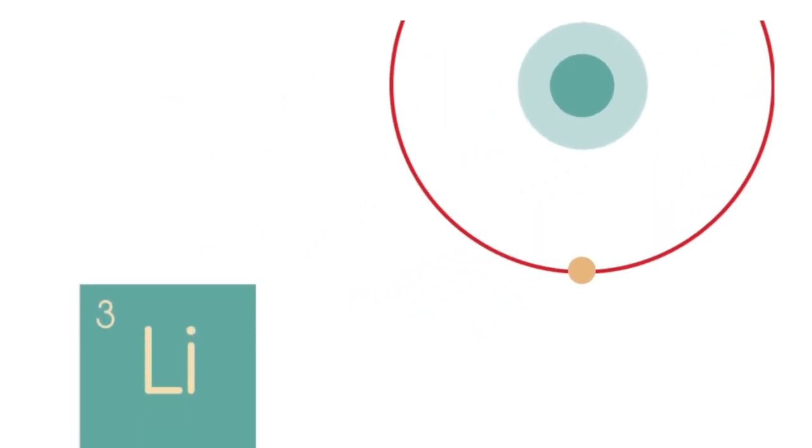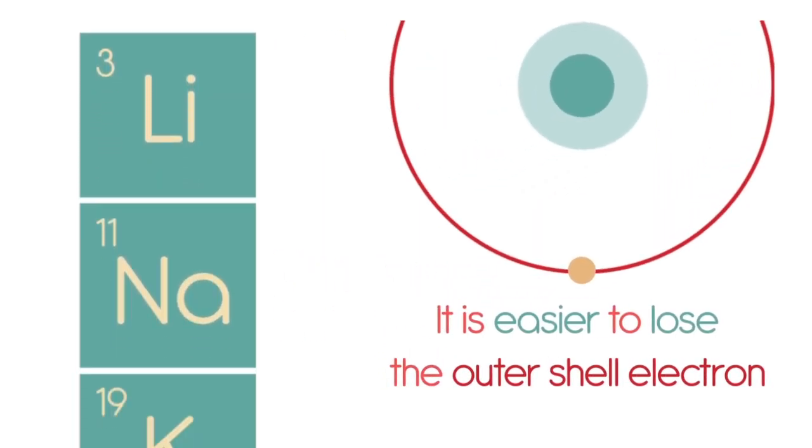Although nuclear charge increases, the atomic radius and shielding, as mentioned, outweigh this increase. So moving down the group, it is easier to lose the outer shell electron.